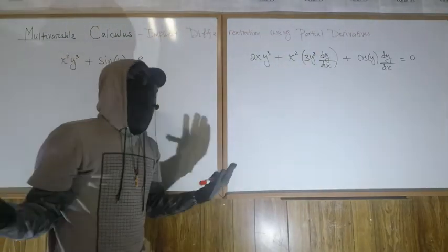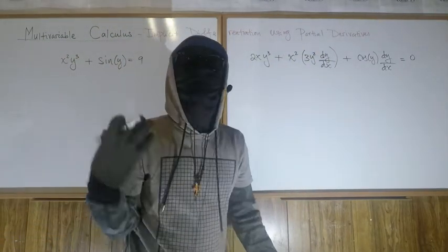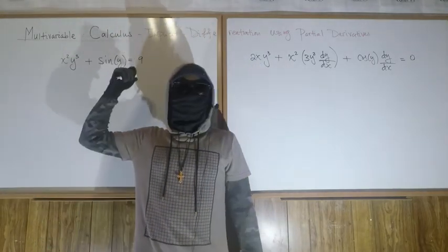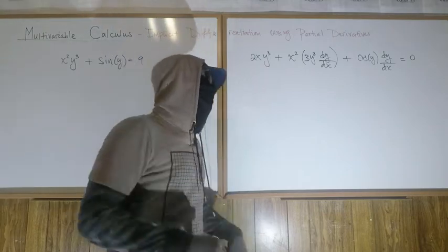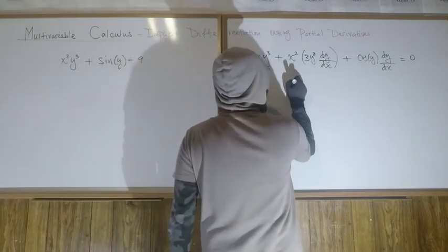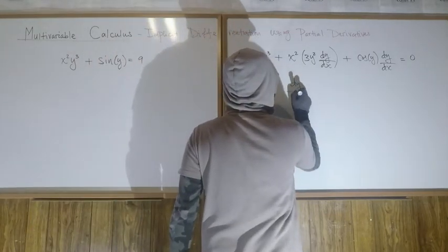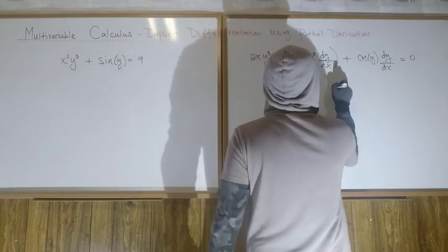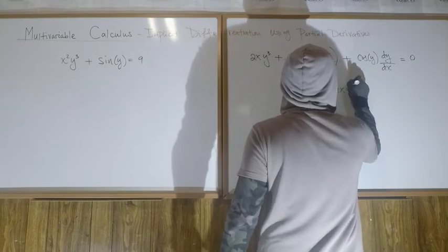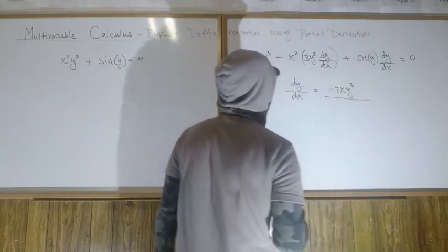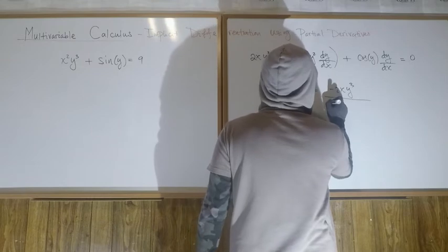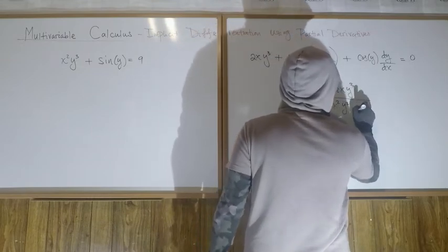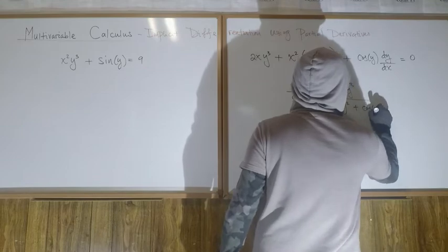Then we collect dy/dx terms and factor out dy/dx and do algebra. I have many videos, in fact a playlist on doing implicit differentiation in Calc 1, so check that out. I'm not going to go through the details here, but it's pretty clear that dy/dx is going to equal negative 2xy³...